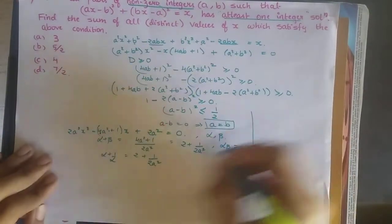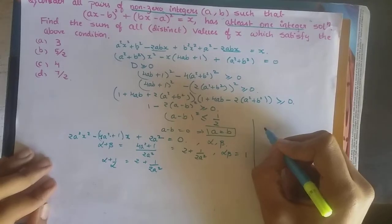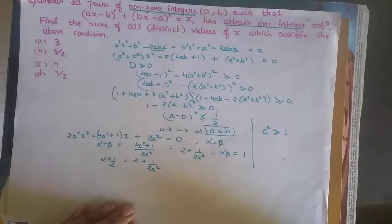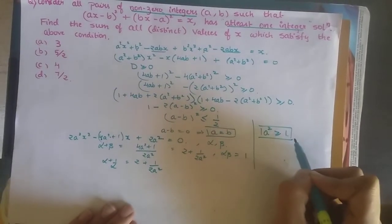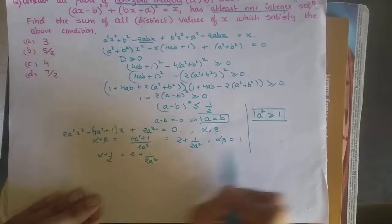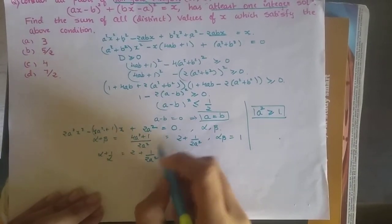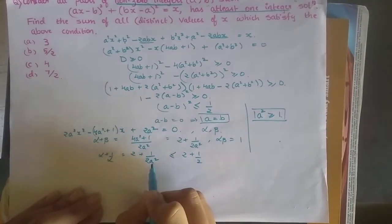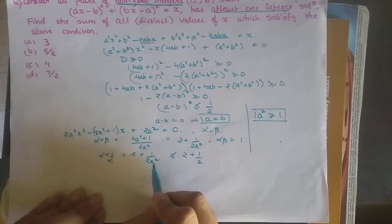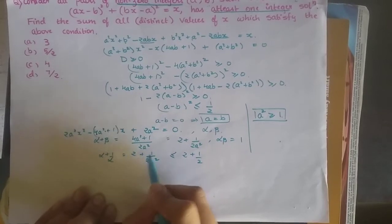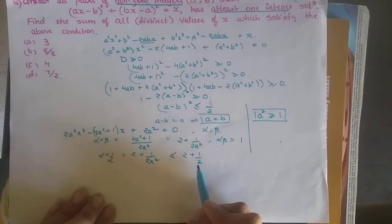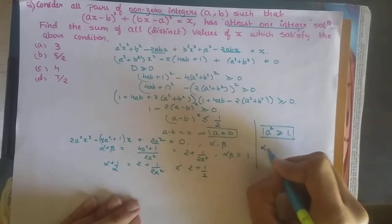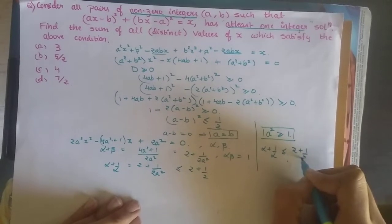Since a is a non-zero integer, a² ≥ 1. Substituting a² = 1 gives the maximum value: α + 1/α ≤ 2 + 1/2. For larger values of a², like a² = 4, the term 1/(2a²) becomes smaller, confirming the maximum is 2 + 1/2. So α + 1/α ≤ 5/2.